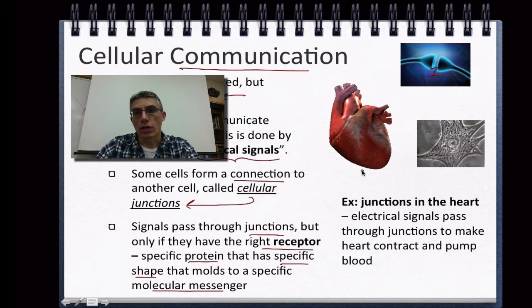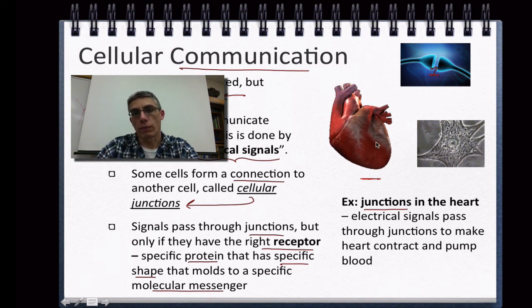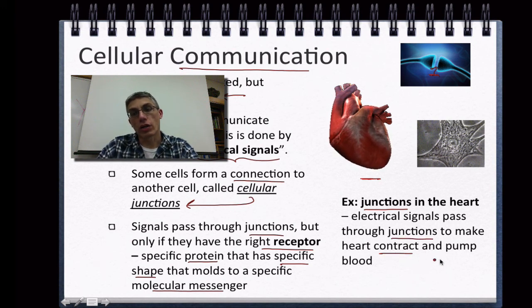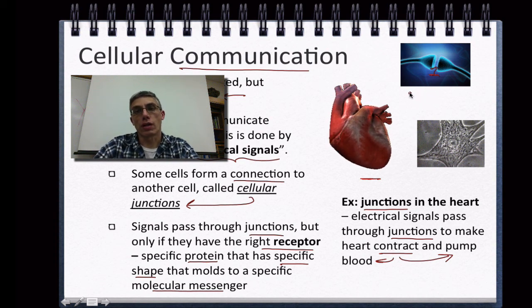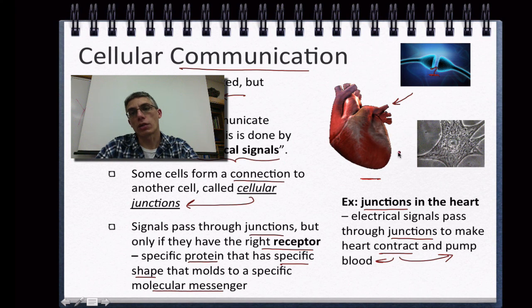Looking toward the middle of the screen, we have an example of a beating heart. This is another example of using those junctions to communicate to the cells that make up this organ. Electrical signals pass through the junctions and allow the heart to contract, pumping blood to various parts of the body. These two systems work together: information from the brain — where you find the neurons — travels down through the spinal cord, and nerves connected to the heart communicate the message that the heart must beat. Once the message is received, the heart beats and pumps blood to various parts.